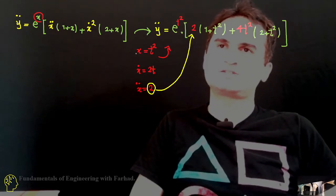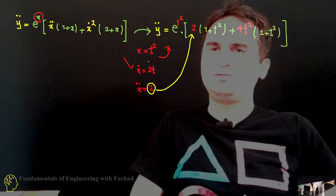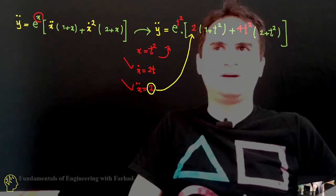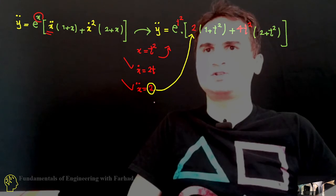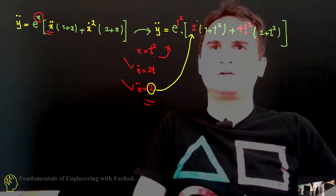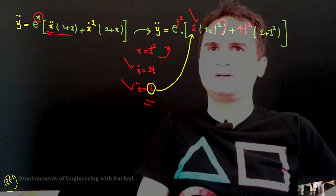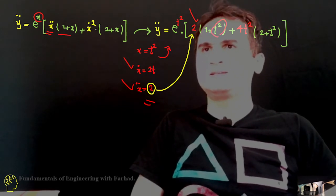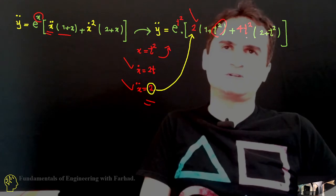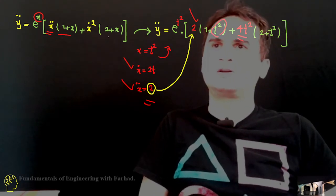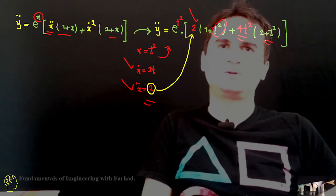So if x is t squared, x dot is two times t, and x double dot is value of two. So x double dot is just two, placed up here, times one plus x, x is t squared, plus x dot squared, which is two t squared, which gives us four t squared times two plus x, which is two plus t squared.